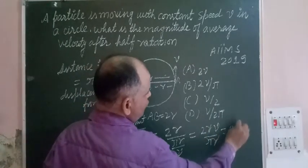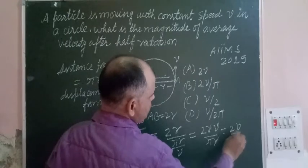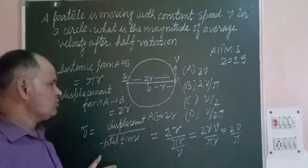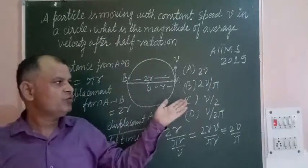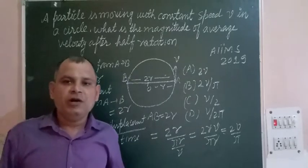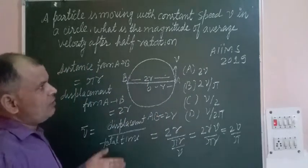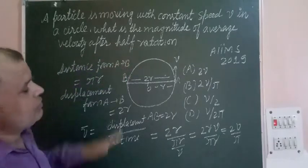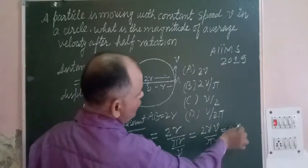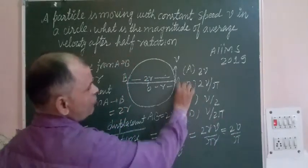So 2R upon πR over V. Here R cancels, we get 2V over π. So students, the average velocity of the particle which is moving in a circular path covering half rotation is 2V over π, which is found in option B.